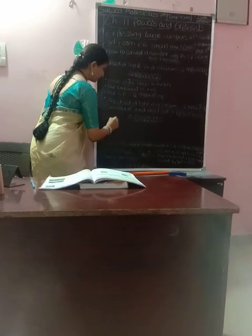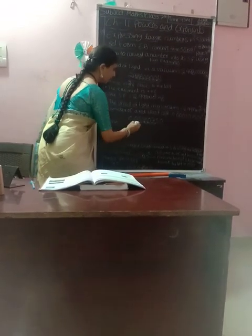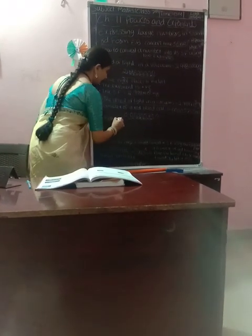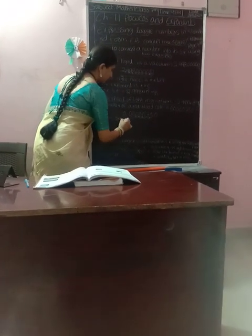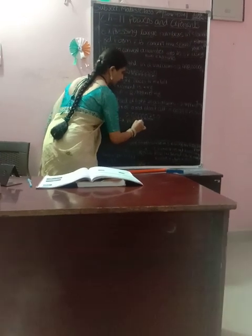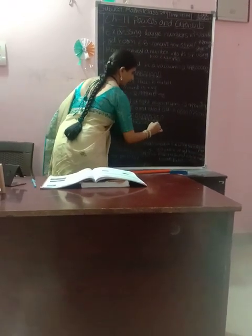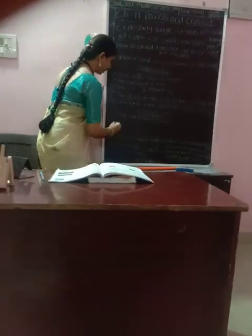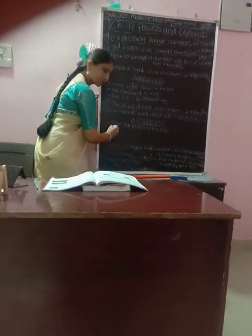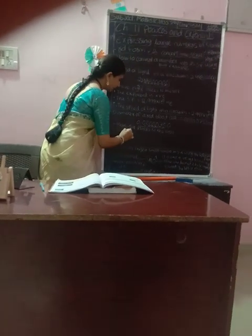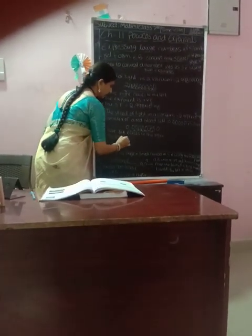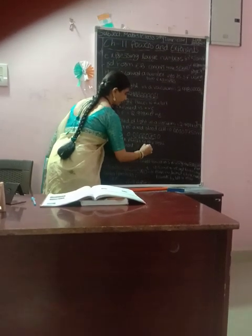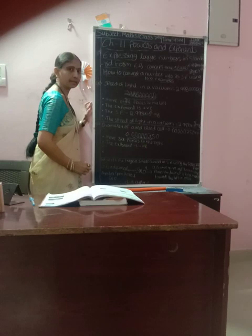Move to the right: 1, 2, 3, 4, 5, 6 — that's 6 places moved to the right. Because the number is between 0 and 1, the exponent is negative.